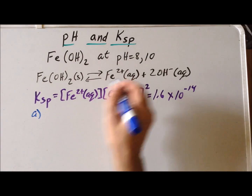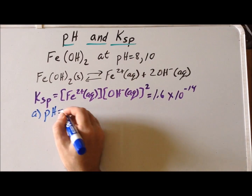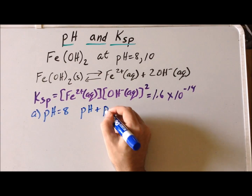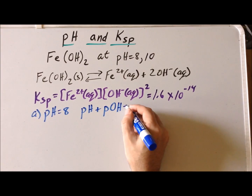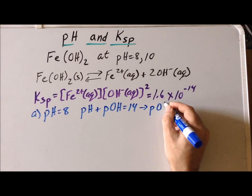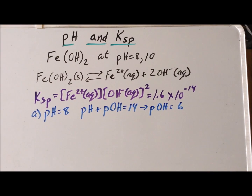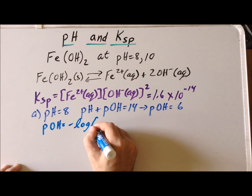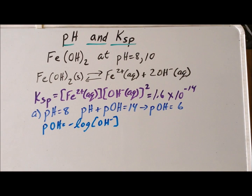Now we look at the case where the pH is equal to 8, as if it's been buffered. Recall that at 25°C, pH + pOH = 14. Since pH = 8, this tells us that pOH = 6. We notice that the pOH in this case is equal to 6.